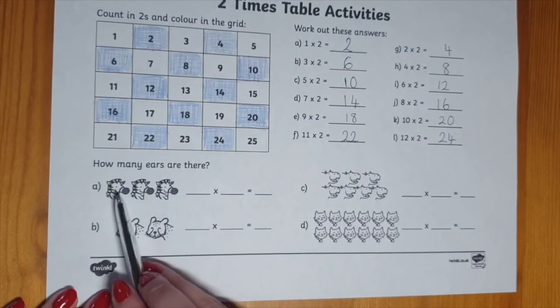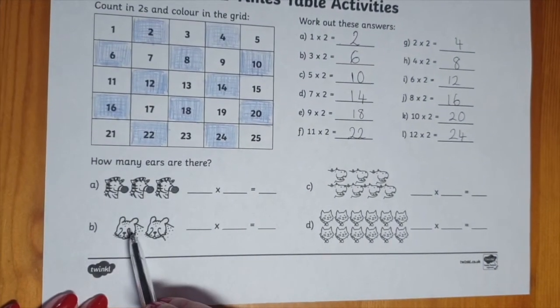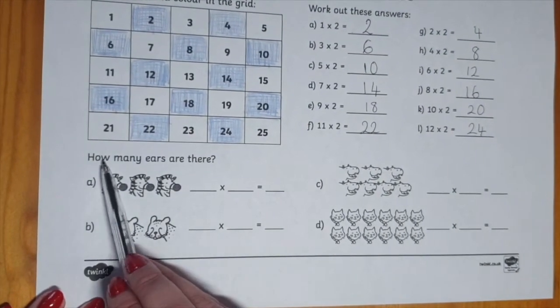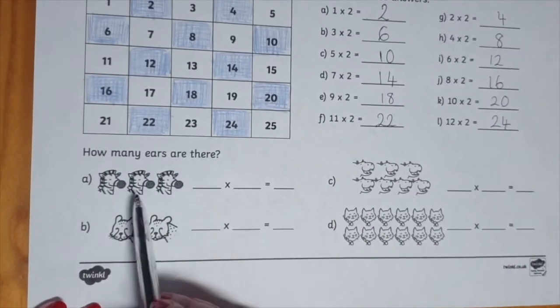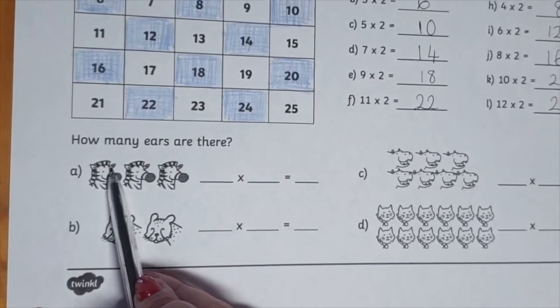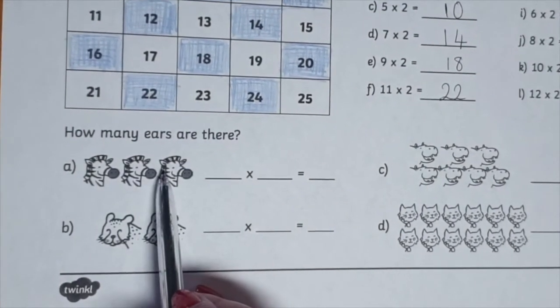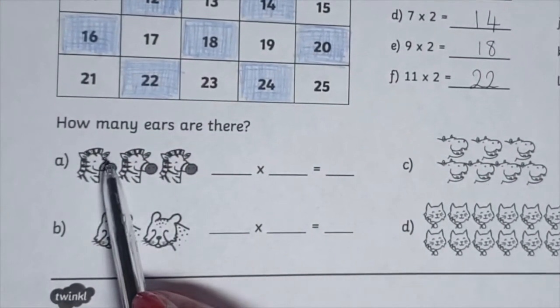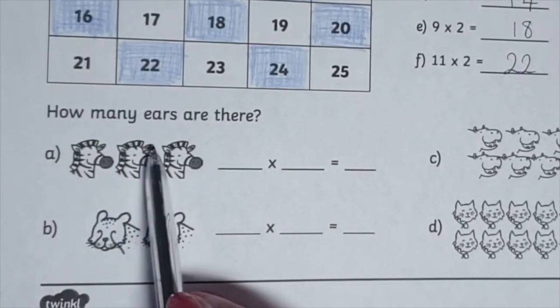At the bottom of the sheet, we have a different way of representing Times Tables. So here it says, how many ears are there? And you're not looking at the animals, you're looking at the ears. We have two ears on each animal. It's not just asking me for how many ears there are in total, which I can count. One, two, three, four, five, six.